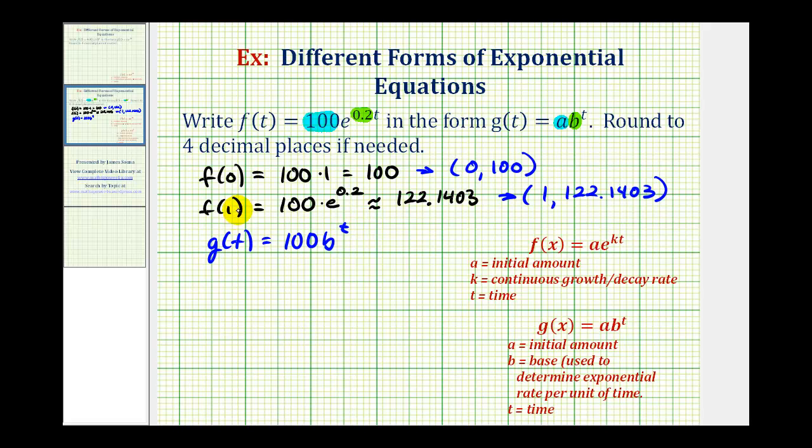So now we'll use the second function value, or second point, to determine our base b. g of 1 must also equal 122.1403. So we'll have g of 1 equals 100 times our unknown base raised to the power of 1, equals the function value 122.1403.